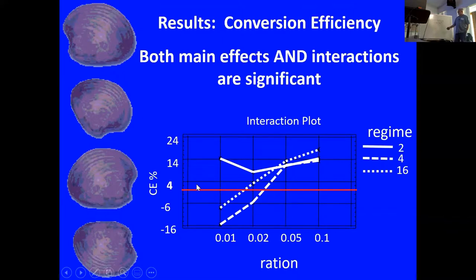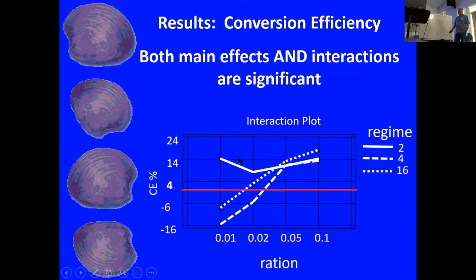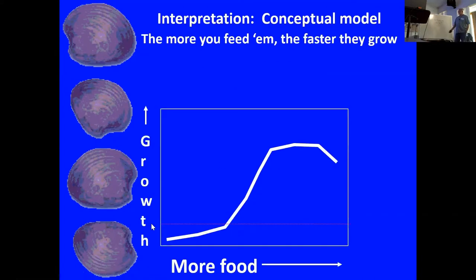On the low diets and two regimes, we got basically no growth — actually negative conversion efficiency. So they're actually using energy to process that diet; they were getting less than no nutrition out of it. Whereas at the big meals, they were getting a positive conversion efficiency. So a little bit puzzling results.